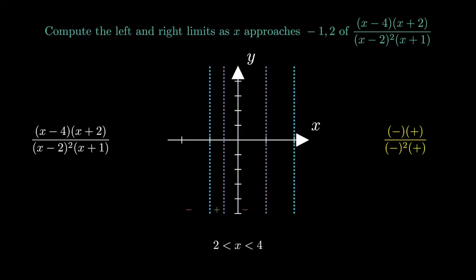Between 2 and 4, x minus 2 is positive, but this doesn't change the sign, so the expression is negative.